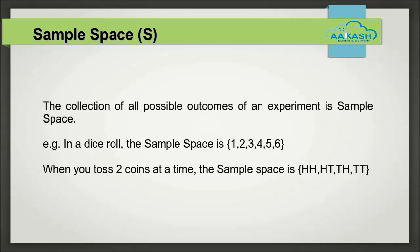Next is sample space. It is the collection of all the possible outcomes of an experiment. For example, when we roll a dice, the sample space is the set of all the outcomes. If we take a dice roll experiment, the sample space would be a set consisting of 1, 2, 3, 4, 5, and 6. If we toss two coins, the sample space would be head-head, head-tail, tail-head, and tail-tail.